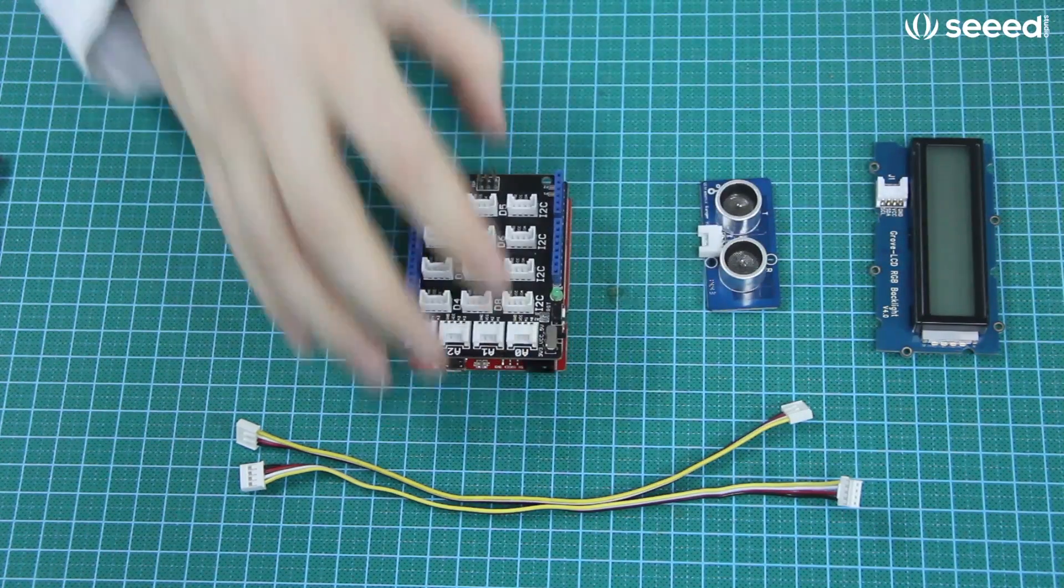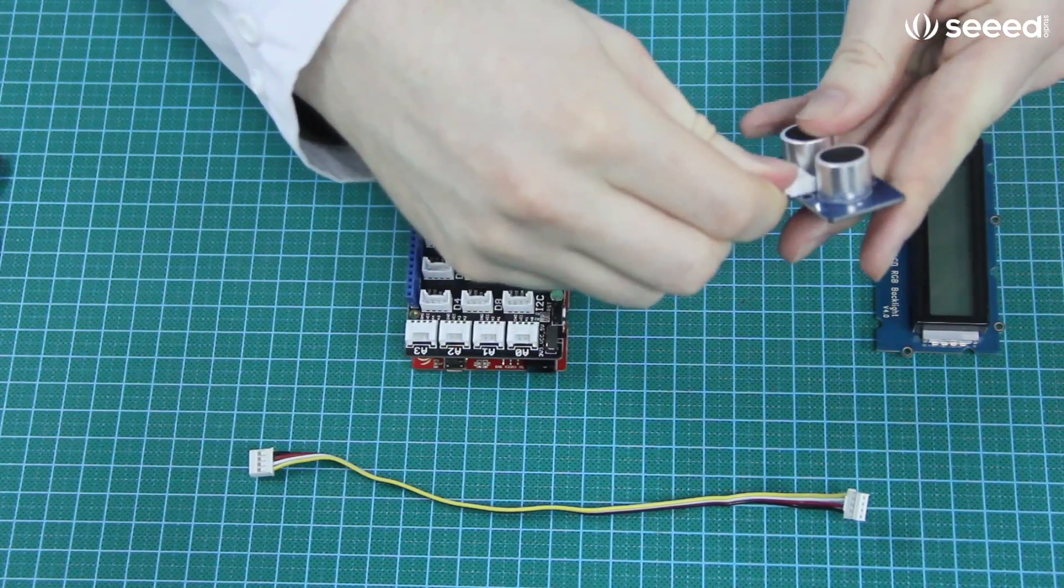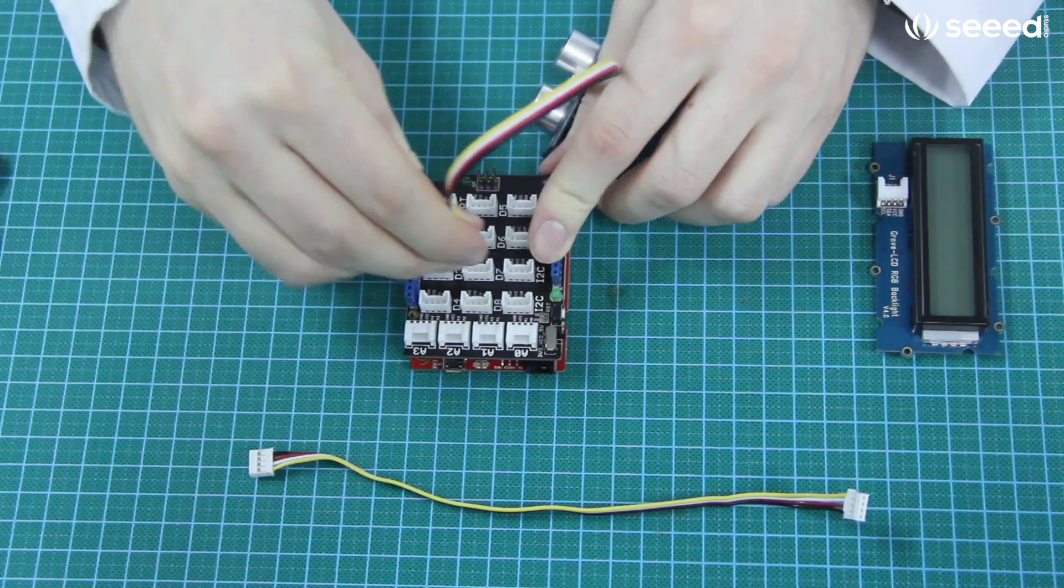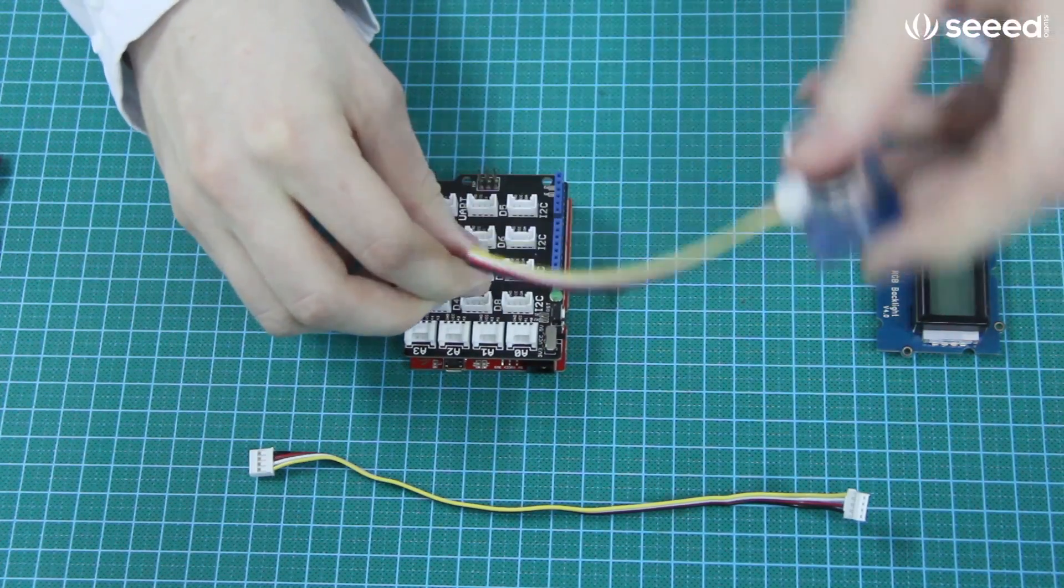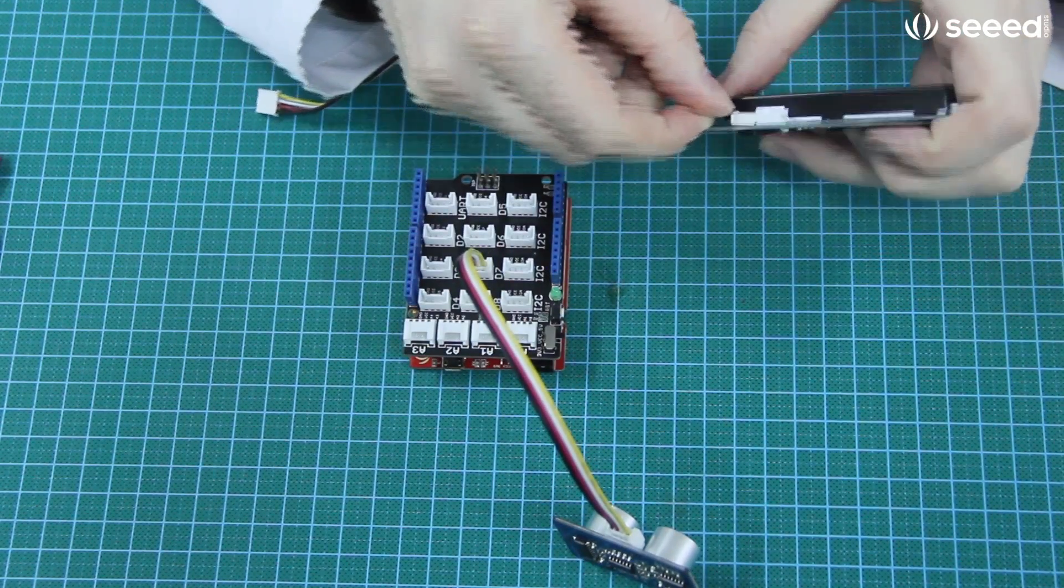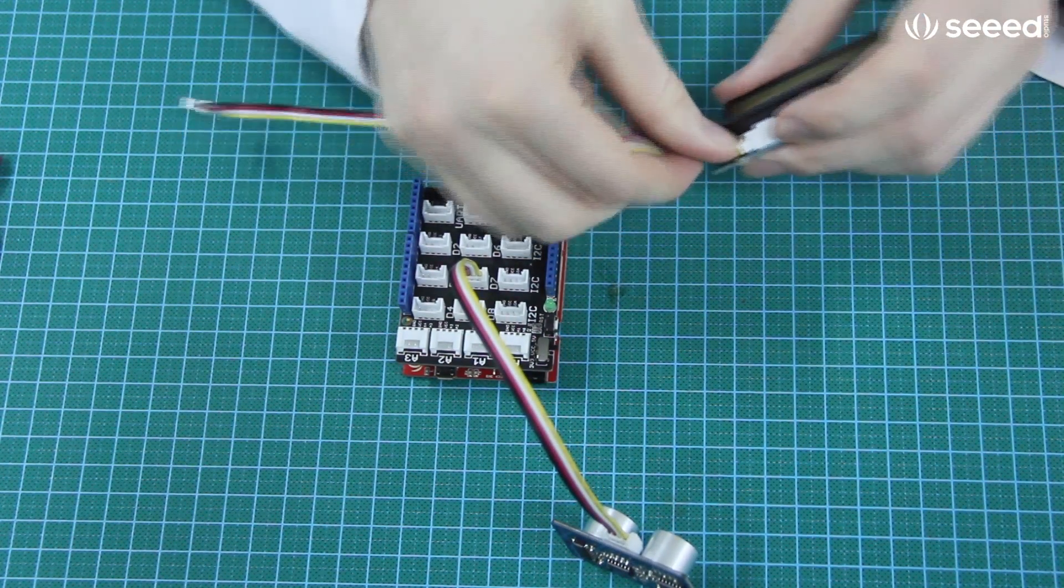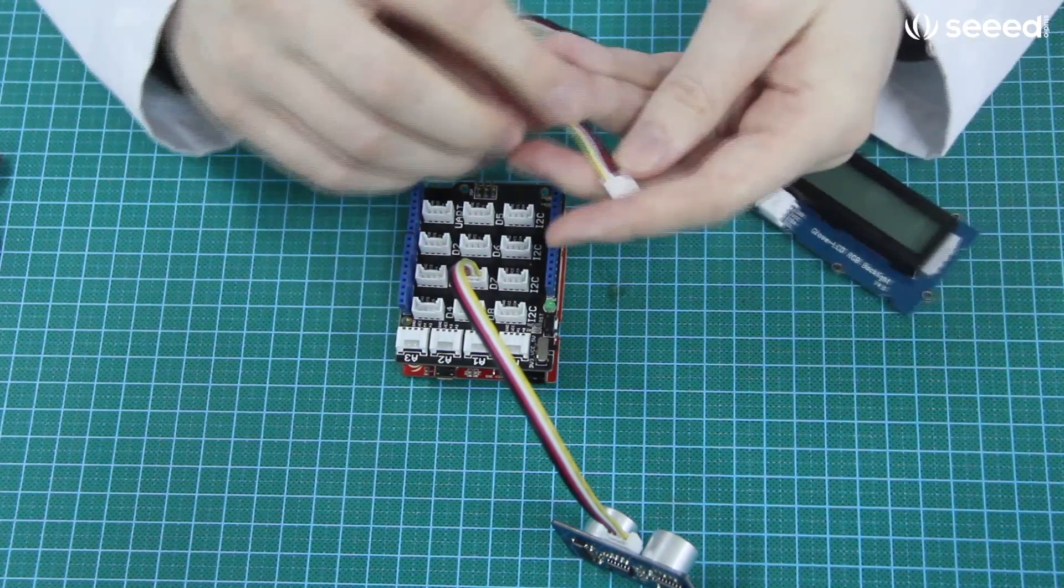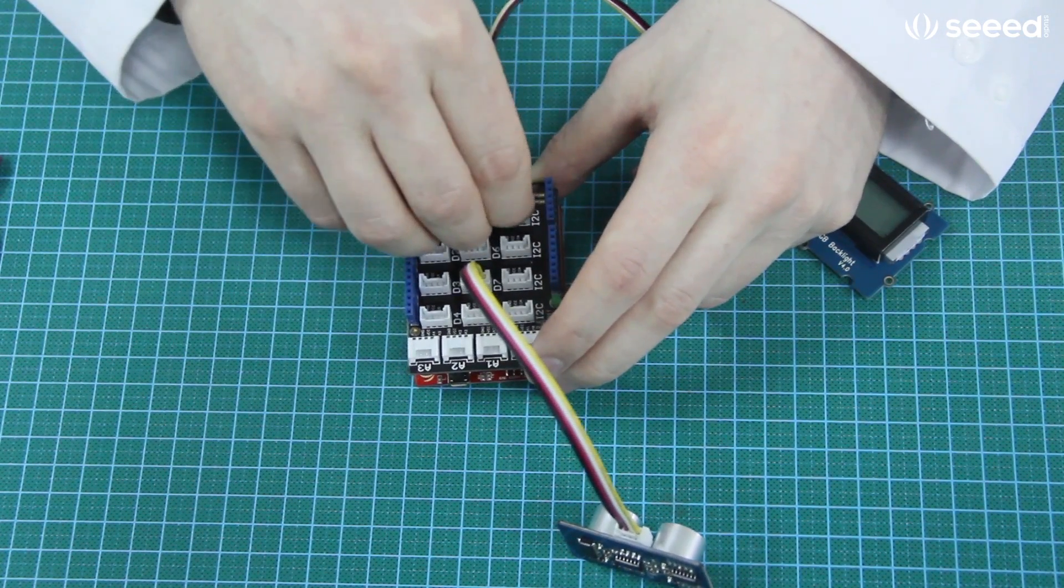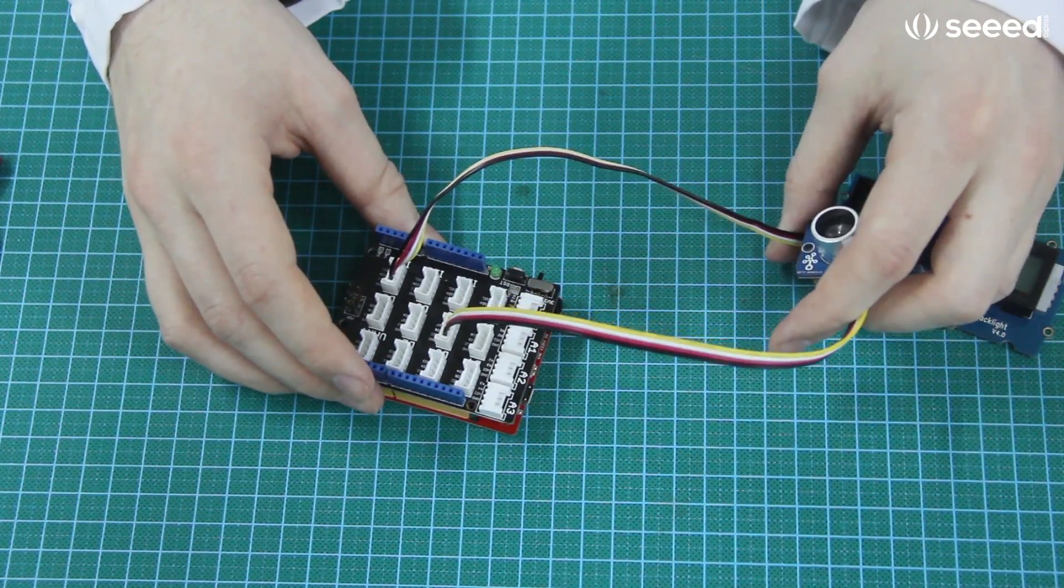Alright, the next step we'll plug in our ultrasonic ranger. So we'll take our Grove cable, plug it right in and then we're going to actually put this right into D7. There we go. Then our backlight, plug in as well. Whoops, try to plug it upside down there. And then we'll plug this into one of our I2C ports. And I keep trying to plug it upside down. There we go. So this is all hooked up and now we just need to connect it to our computers and we're good to go.